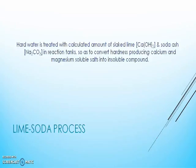One needs to analyze the water first for its hardness and then calculate the amount of lime and soda required to add to remove hardness. When you mix these chemicals with hard water in a reaction tank, soluble salts of calcium and magnesium get converted to insoluble salts or precipitate. This precipitate can be easily removed by techniques like sedimentation or filtration to get soft water.